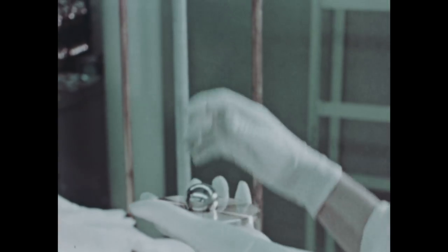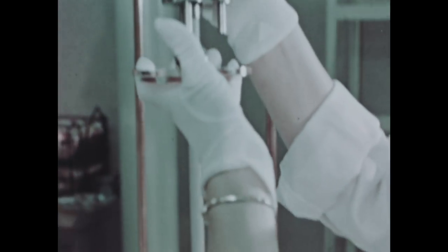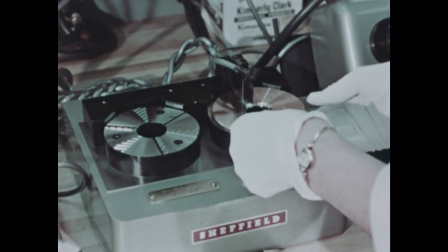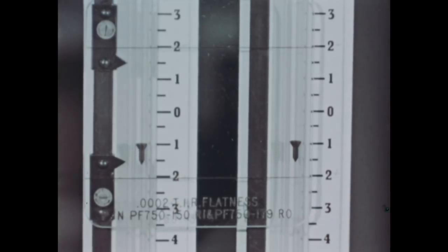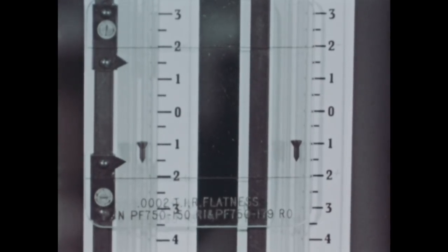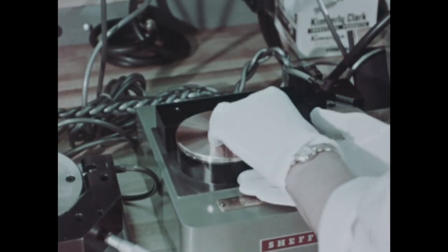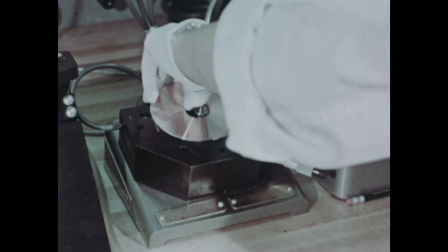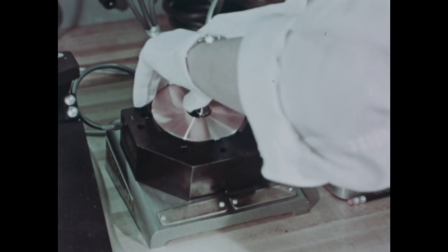The completed disc is now checked in quality control. The radius is first checked by the height of the ball. The diameters are checked as well as thickness, parallel, and flatness. The gauge numbers indicate tenths of a thousandth of an inch, and the outside diameter and thickness of the disc must be within two-tenths of a thousandth. The concentricity of the hole is measured with respect to the outside diameter.